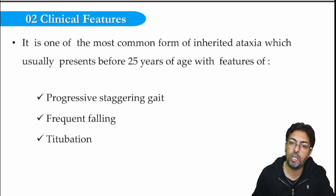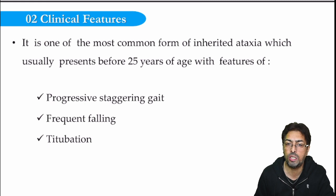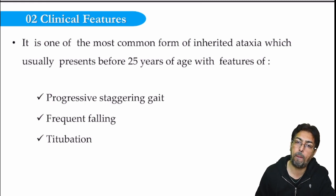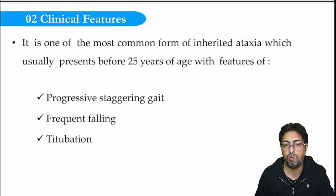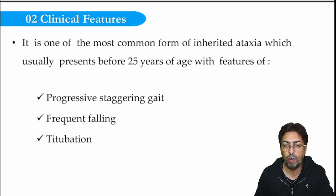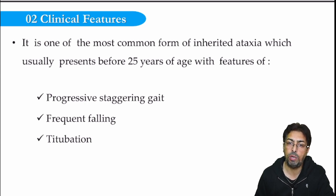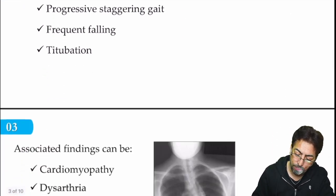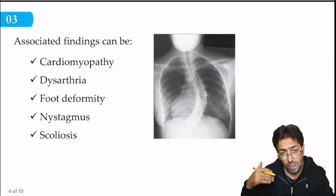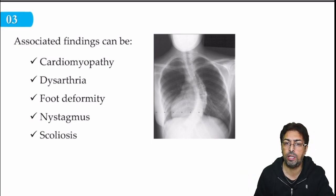The patient presents with a staggering gait — there will be abnormality in walking, stance, and gait. In addition, the patient will experience frequent falls, being unable to maintain balance. There will be abnormal oscillatory movement of the head or body, a condition given the term titubation. Staggering gait, frequent falls, and titubation are the fundamental neurological features of Friedreich's ataxia, obtainable from history or neurological examination.